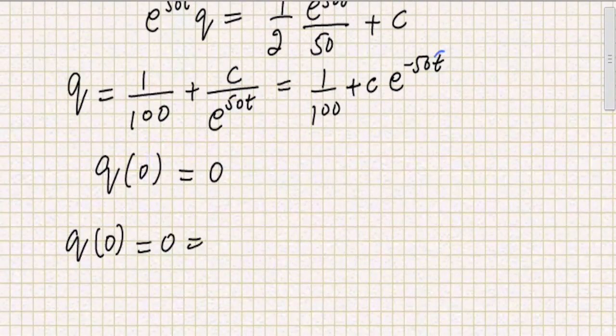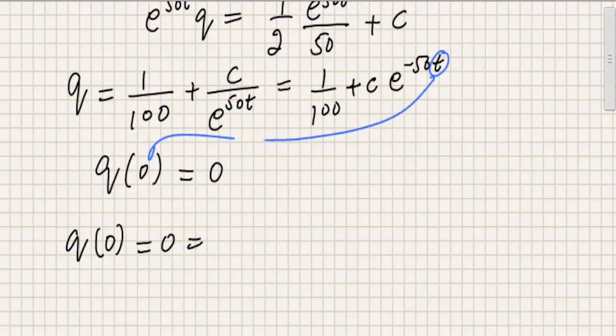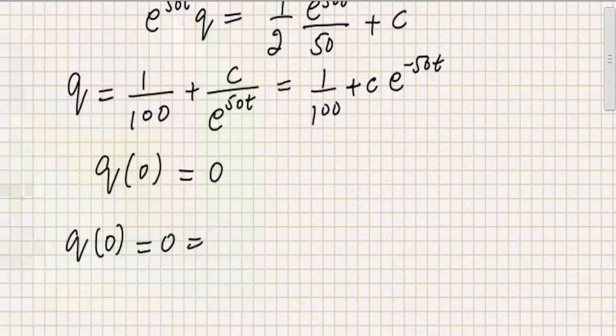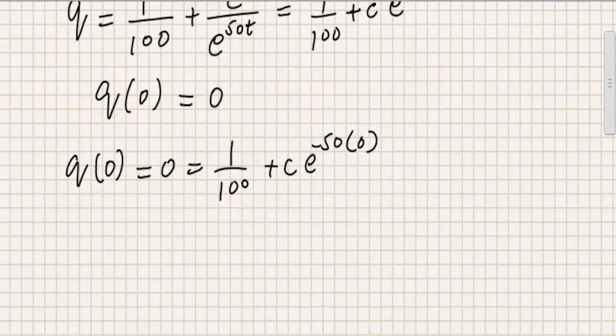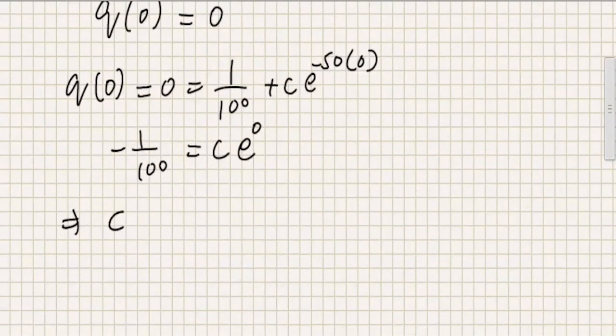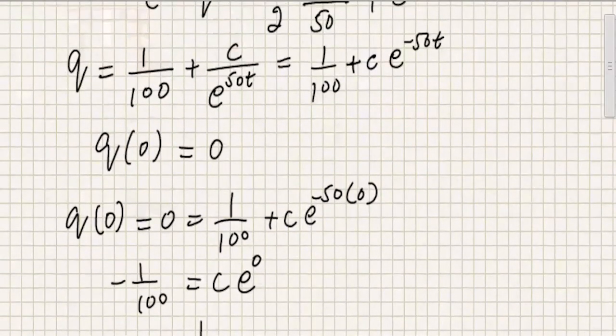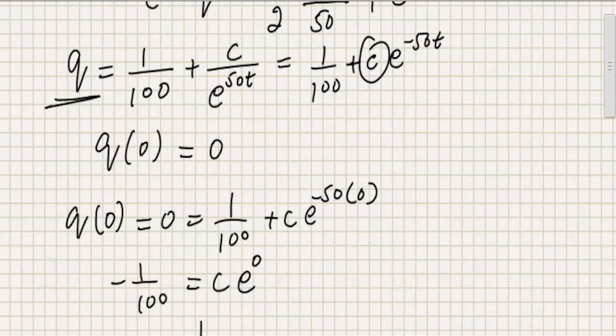So this time will be 0. Okay, so on the right hand side, I get 1 over 100 plus C e to the power minus 50 into 0. So I get minus 1 over 100 equal to C e to the power 0. So it shows the value of C is minus 1 over 100. So I'm going to substitute this value over here in the general solution.